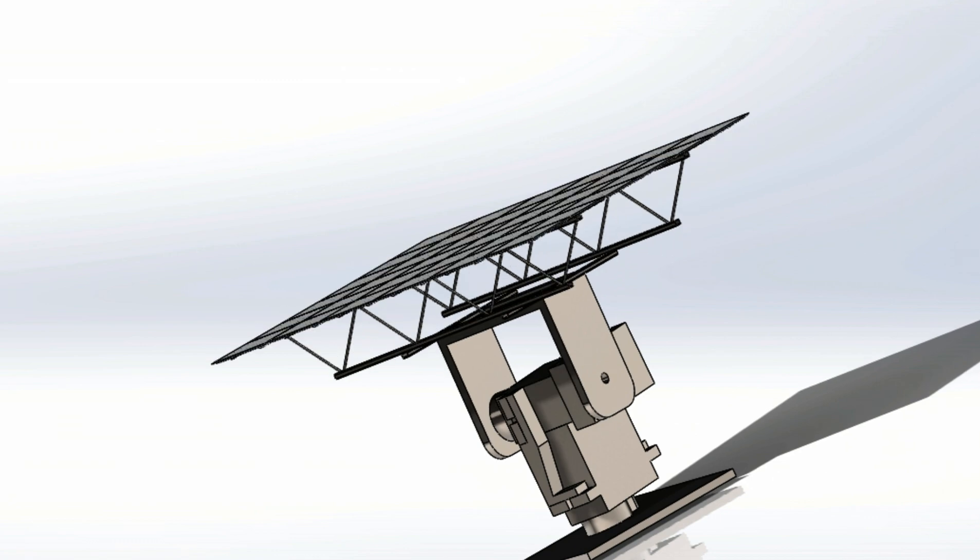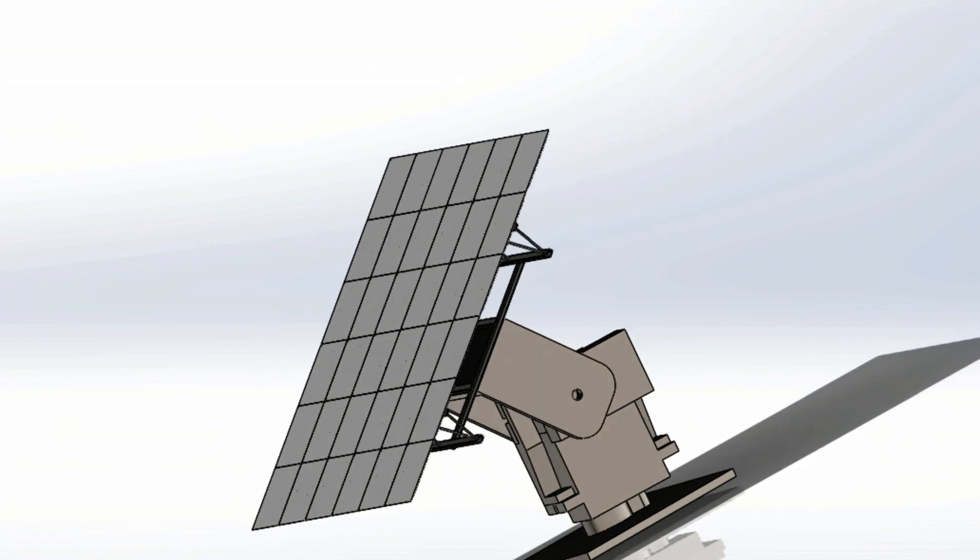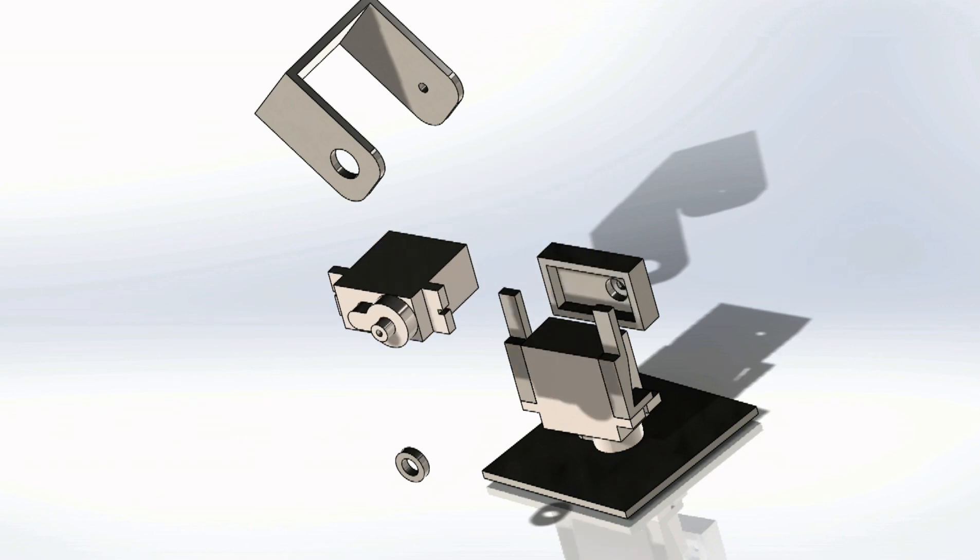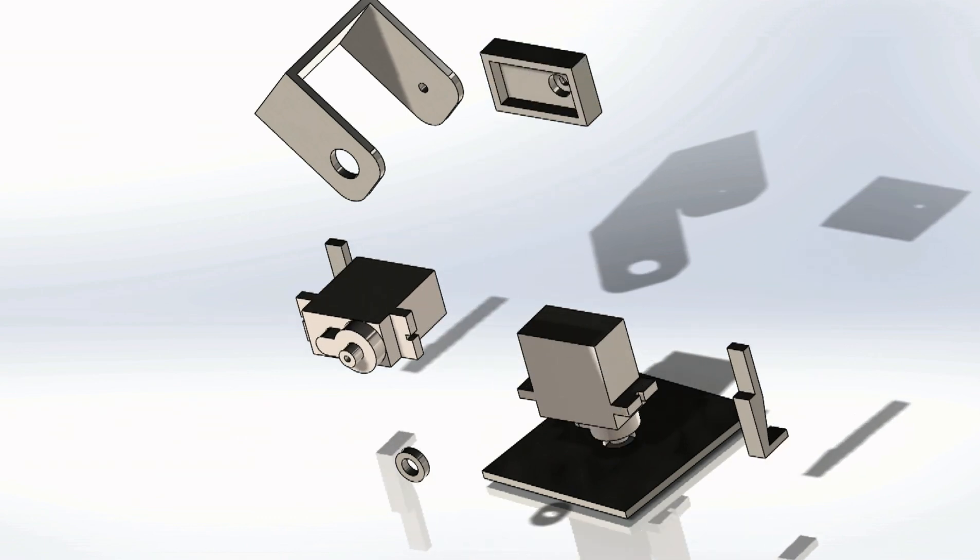20-foot mirrors direct sunlight to the solar receiver at the top of the tower using a sun tracking system connected to the rotating base. The base pivots in two places to allow for a full range of motion.